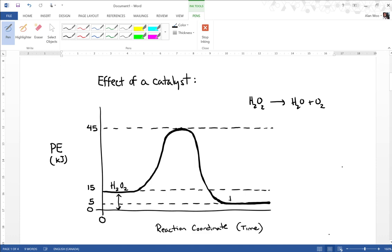For the products, the potential energy for the product is at 5 kilojoules. So when you look at the difference here between your starting reactants and your ending products, that's a difference of 10 kilojoules. Those 10 kilojoules is basically released, making this an exothermic reaction.